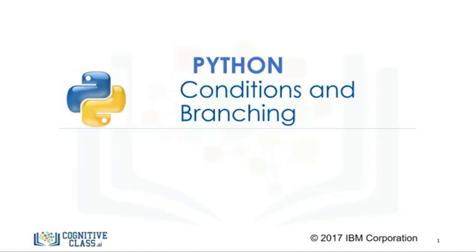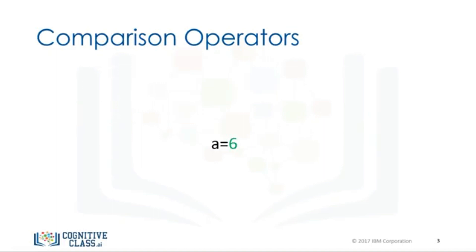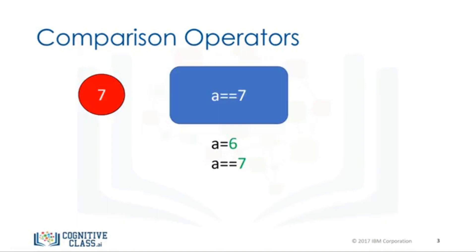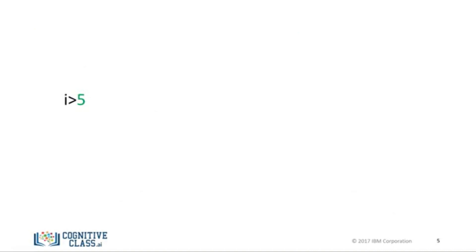In this video, you will learn about conditions and branching. Comparison operations compare some value or operand. Then, based on some condition, they produce a boolean. Let's say we assign a value of 6 to a. We can use the equality operator denoted with two equal signs to determine if two values are equal. In this case, if 7 is equal to 6 — as 6 is not equal to 7, the result is false. If we performed an equality test for the value 6, the two values would be equal and we would get true. Consider the following equality comparison operator. If the value of the left operand — in this case the variable i — is greater than the value of the right operand, in this case 5, the condition becomes true, or else we get false.